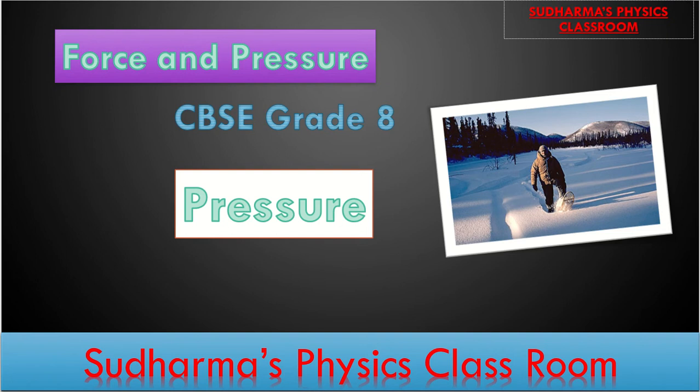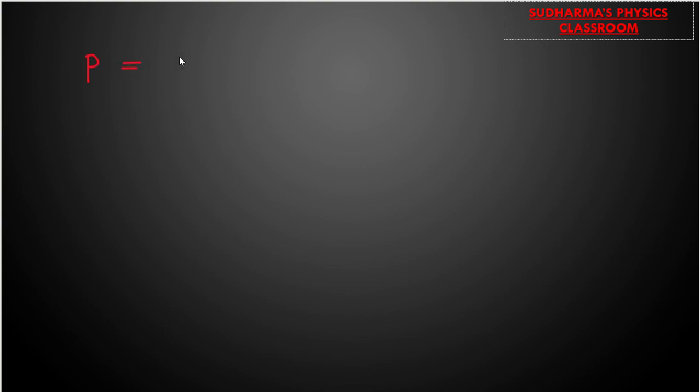Let's come into today's topic: Pressure. What is pressure and how do we define it? Pressure is defined as the force per unit area — the force acting on an object per unit area. Pressure is represented by the letter P, and the formula is P equals Force divided by Area. F is the amount of force acting on the object and A is the area on which this force is acting.